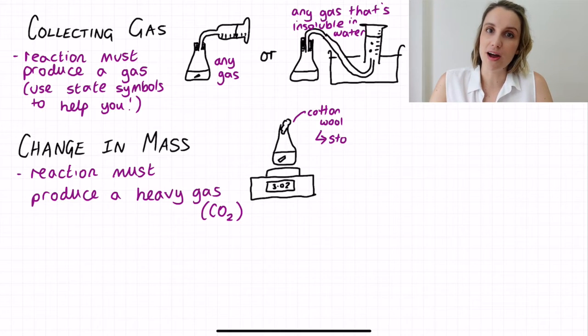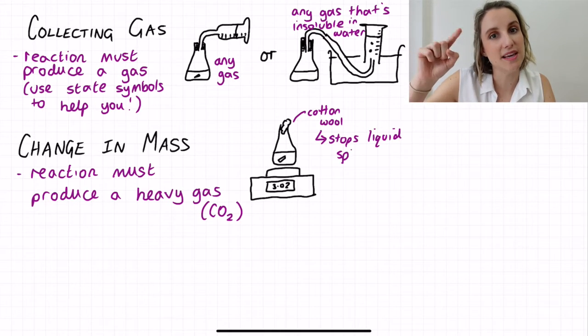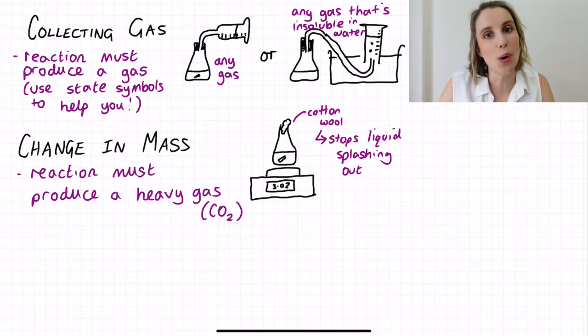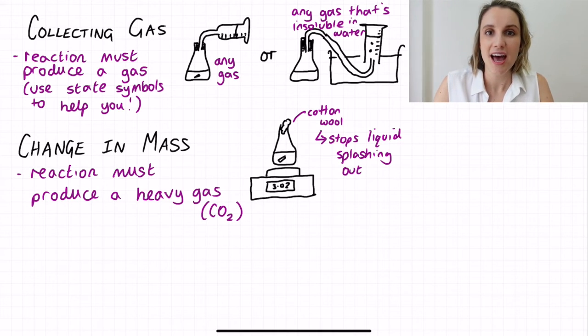The other thing to be aware of is that we often put this piece of cotton wool in the top of the reaction vessel, and what this is there for is to stop any liquid from splashing out of the vessel, so that the only mass change that we're observing is the loss of gas and not the loss of any liquid.